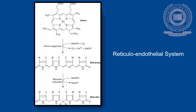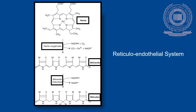Now let us discuss how heme forms bilirubin. Inside the reticuloendothelial system, heme is acted upon by the enzyme heme oxygenase, and the product formed is biliverdin. This biliverdin is further acted upon by the enzyme biliverdin reductase, undergoes reduction, and finally forms bilirubin.